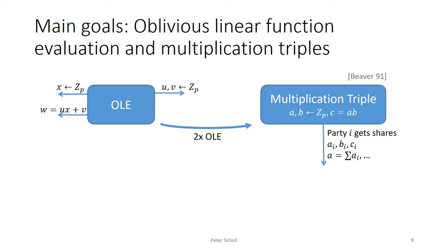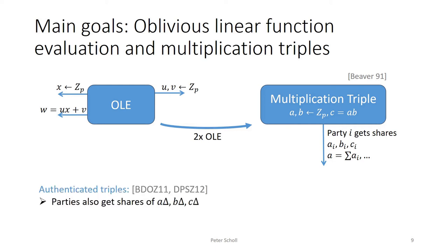These two correlations are related in that in the two-party setting, two random OLEs can be locally converted into a single multiplication triple. We also consider authenticated multiplication triples, which are a stronger variant used in actively secure protocols such as SPDZ. Here, as well as a, b, and c, each party also gets an additive share of these values multiplied by a random MAC key delta.